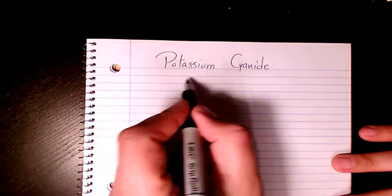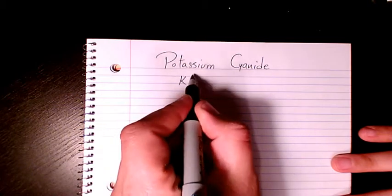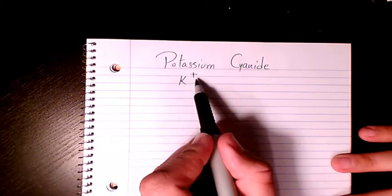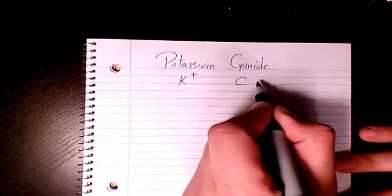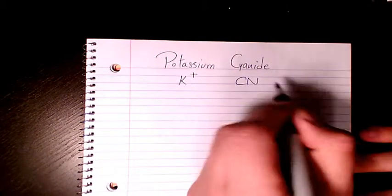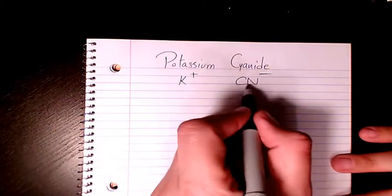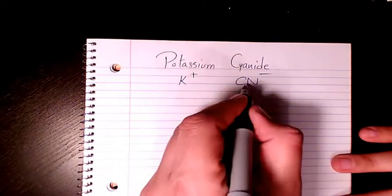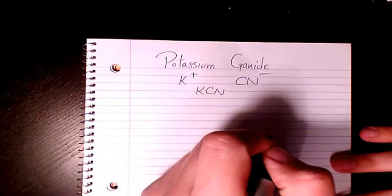So first of all, let's start with writing the chemical formula. Potassium is K+ because it belongs to group one, and cyanide is the polyatomic ion that has CN with negative one charge. So CN- is cyanide, and then we combine them. One and one gives us KCN.